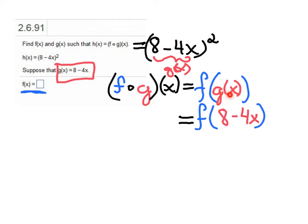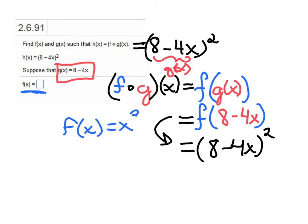g is the inside function and f is the outside function. The inner function in this case is 8 - 4x. The outer function is the squaring function. What we would need to do to go from f(8 - 4x) to (8 - 4x)² is apply the squaring function. This implies that f(x) = x².